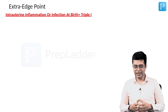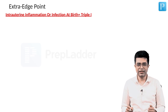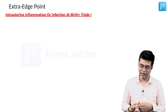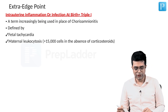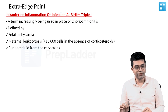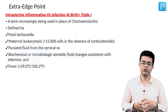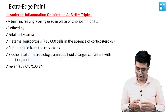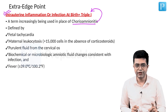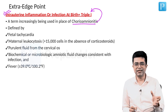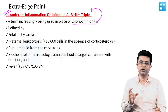An extra edge point: there is a condition called intrauterine inflammation or infection at birth — 1i, 2i, 3i, also called Triple I. This is the currently used terminology for chorioamnionitis. It is defined by fetal tachycardia, maternal leukocytosis more than 15,000 cells in the absence of corticosteroids, purulent fluid from the cervical os, biochemical or microbiological amniotic fluid changes consistent with infection, and fever equal to or more than 39 degrees Celsius or 100.2 degrees Fahrenheit. The definition of chorioamnionitis has been slightly altered, and this new terminology is mentioned in Nelson and other textbooks. Past exam papers have included questions on fetal and maternal risk factors related to chorioamnionitis.